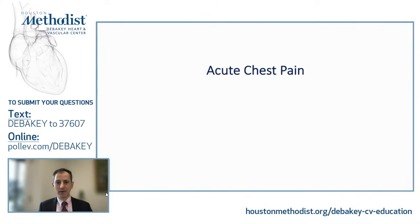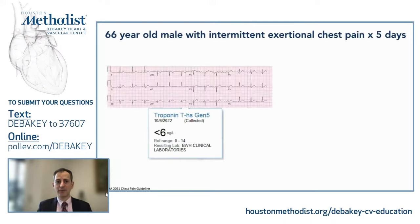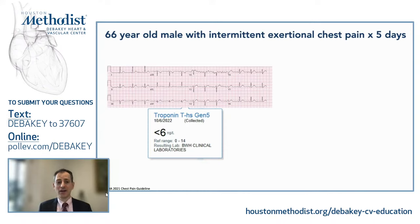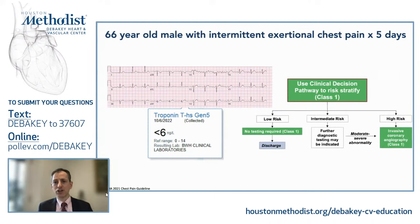Let's talk about acute chest pain — another important application of coronary CT angiography. Here's a case: a 66-year-old male presenting to our emergency department with five days of exertional chest discomfort, a fairly unremarkable EKG, and a high-sensitivity troponin below the assay — very reassuring. I might be tempted to send this patient home. But the 2021 chest pain guideline has a class one recommendation to use a clinical decision pathway — a CDP — to stratify patients into low-risk (can be discharged), high-risk (probably go to the cath lab), or intermediate-risk (more testing needed).